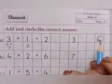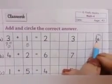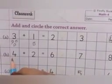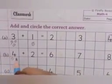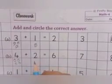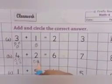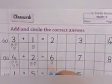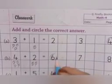Now column B. How many circles will we draw? 4. So 1, 2, 3, 4. Now which sign is this? Plus. Now which number is this? 2. So 2 circles. Now we will count all the circles together. 1, 2, 3, 4, 5, 6. How many circles did we count? 6. So where is number 6? Here it is. So we will circle on the number 6.